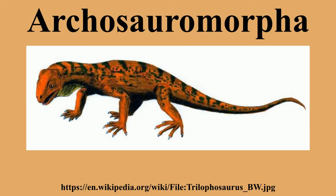Archosauromorphia is an infraclass of diapsid reptiles that first appeared during the late Permian and became more common during the Triassic. It was defined by Jacques Gauthier, Arnold G. Kluge, and Timothy Rowe as the group containing archosaurs and all other saurians that are closer to archosaurs than they are to Lepidosaurs.